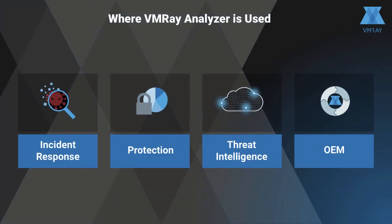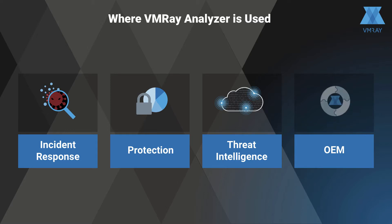VMRay Analyzer is a powerful analysis tool designed for four use cases. DFIR specialists use VMRay Analyzer when dealing with targeted attacks. Enterprises integrate VMRay Analyzer seamlessly into their cyber defense to strengthen their protection capabilities for next-gen firewalls and other security solutions. VMRay Analyzer is also used to augment threat intelligence feeds by automating threat analysis and providing machine-readable outputs. Finally, OEMs can embed VMRay in their own offering to provide enhanced analysis and detection.